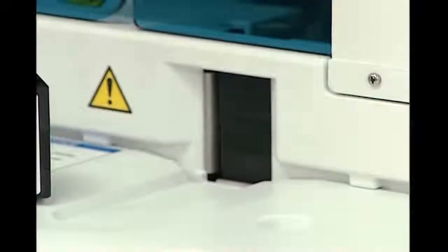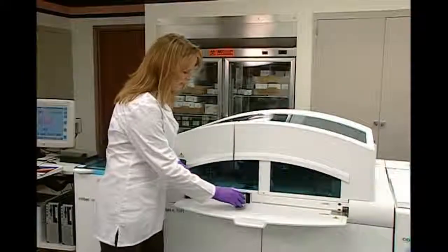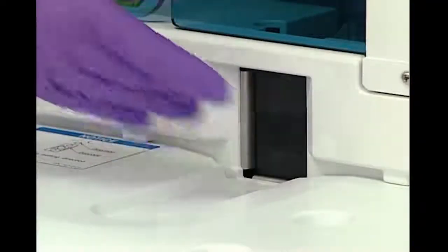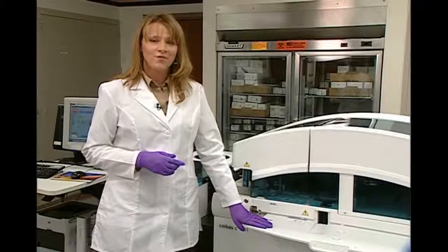Once in the system, the gripper is going to take the cassette in, pierce the caps, and then load it onto the reagent platform. Once the first reagent pack is in, I can take my second cassette and place it into the entry port. Now that we've loaded the reagents on the C501, we're now going to go and load the reagents for the E601.